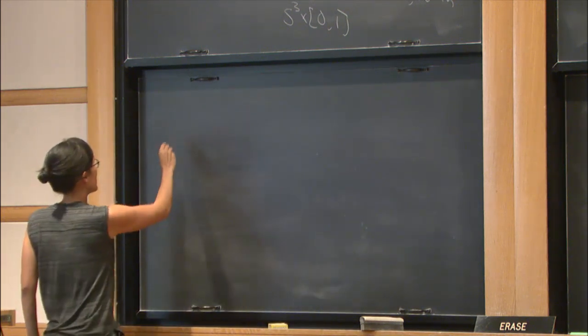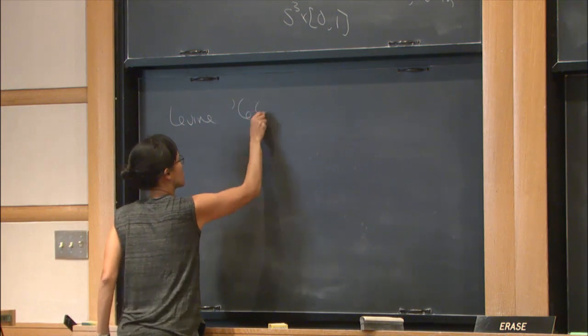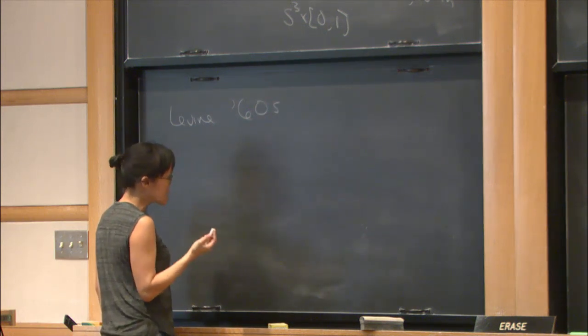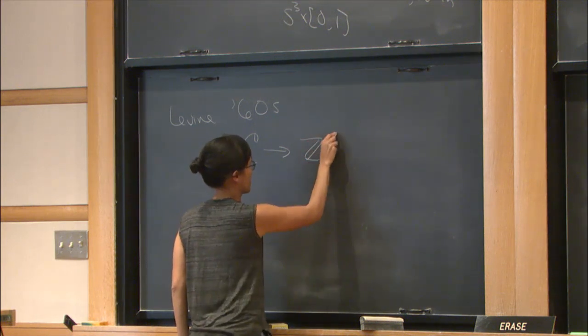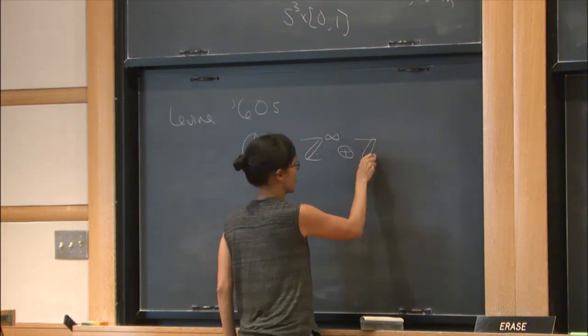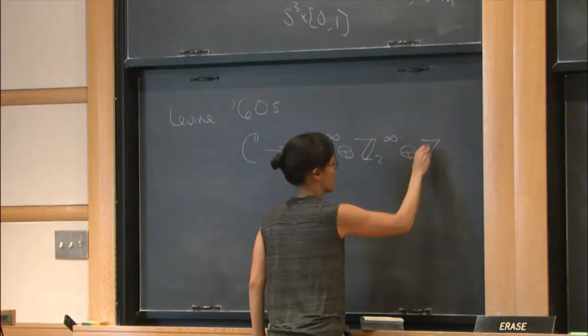So Levine in the '60s defined a surjective homomorphism from the concordance group to Z^∞ ⊕ (Z/2Z)^∞ ⊕ (Z/4Z)^∞.